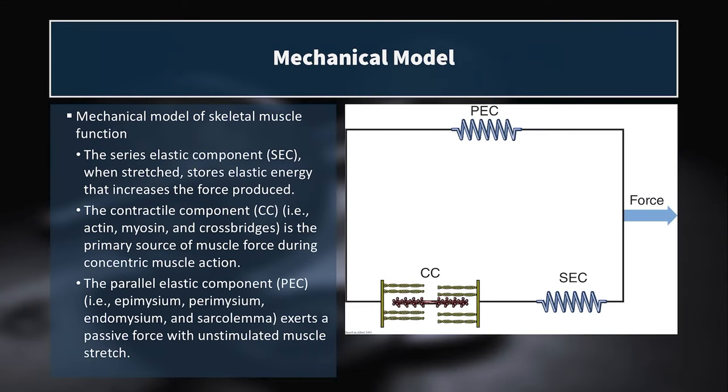When your muscle contracts concentrically, it generates force, but that costs you ATP and produces byproducts of fatigue. But if you capture potential energy — say from your body mass falling toward earth due to gravity — and store that in the elastic components like giant springs or rubber band-like mechanisms, you can return that energy upon the subsequent muscular contraction. The stretch shortening cycle allows us to be not only more efficient but more forceful and explosive. Anatomically, the series elastic component refers to your tendons — the tendons in series with the muscle fibers themselves.